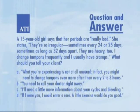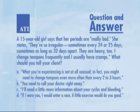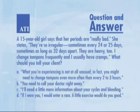Let's take a look at a situation you could easily encounter with a teenager. How would you respond to her questions? A 15-year-old girl says that her periods are really bad. She states: 'They're so irregular, sometimes every 24 or 25 days, sometimes as long as 32 days apart. They are heavy too. I change my tampons frequently, and I usually have cramps.' What should you tell your client?